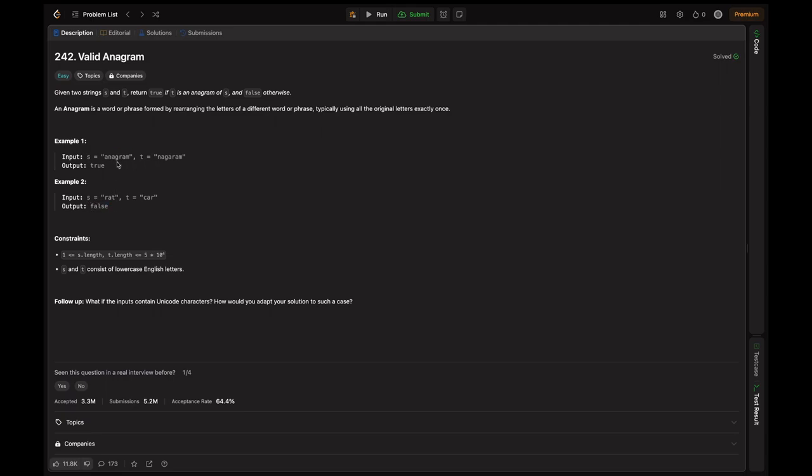And with example one, we have a repeated three times here and a repeated three times here as well. And n is repeated one time and n is repeated here also one time. So g one time here, g one time and r one time, r one time. So m one time, m one time. So this is a valid anagram, so we should return true.